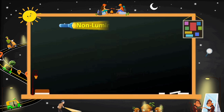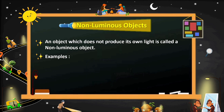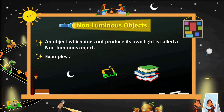Now we will see what are non-luminous objects. An object which does not produce its own light is called a non-luminous object. Examples include the moon, an auto, and books — none of which produce their own light.